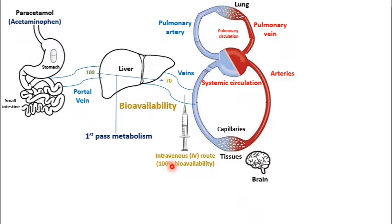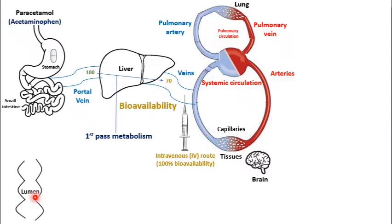There are many routes by which first-pass metabolism is bypassed, such as sublingual or injection routes, but only one route gives 100% bioavailability: the intravenous route. Now, how does the drug pass from the GIT and get into the portal vein? In a part of the small intestine, the cavity within the tube is called the lumen, and the boundaries of this cavity are called the wall.